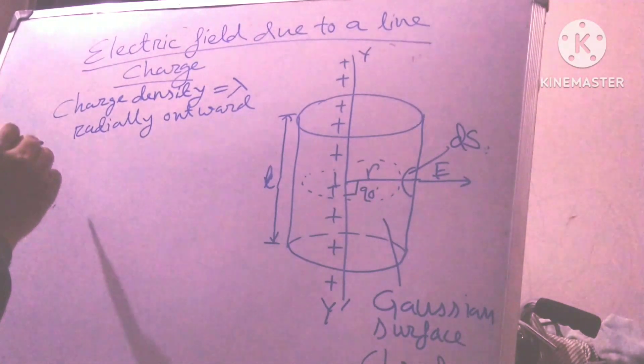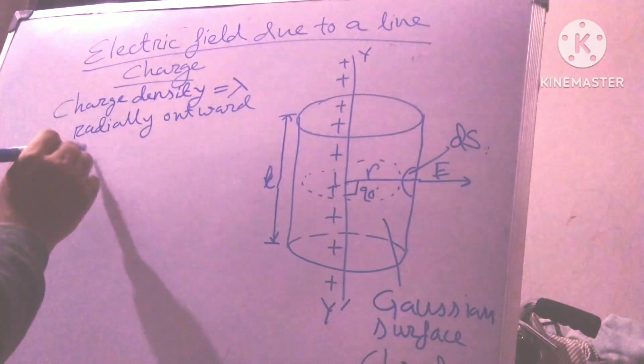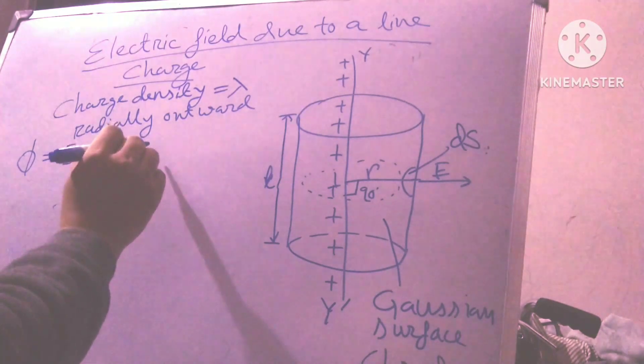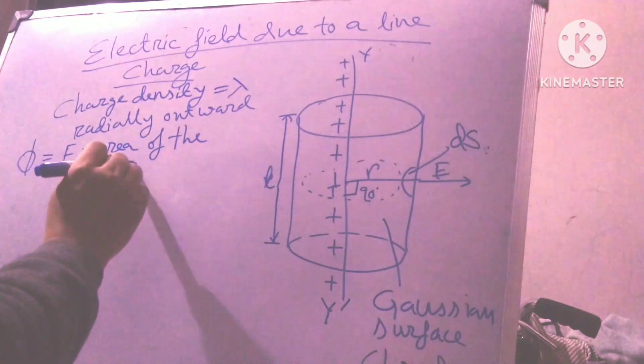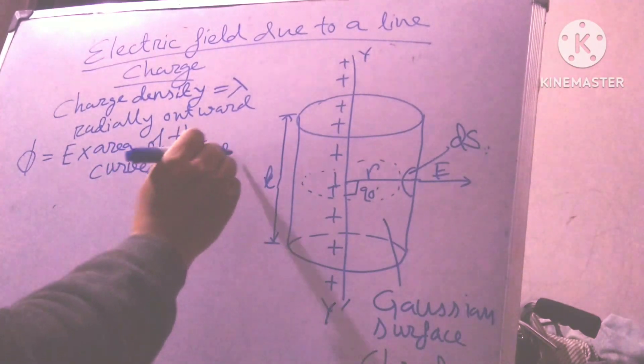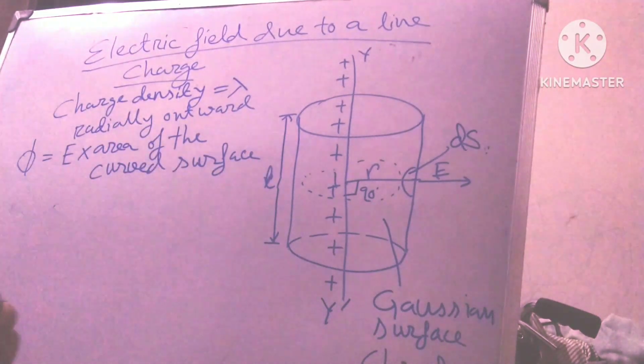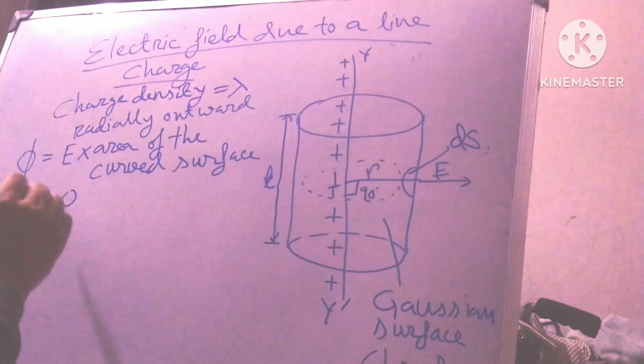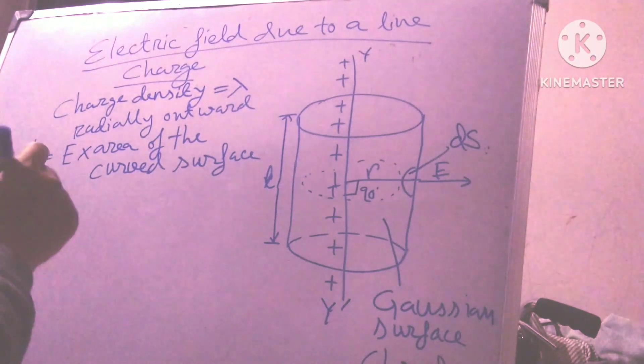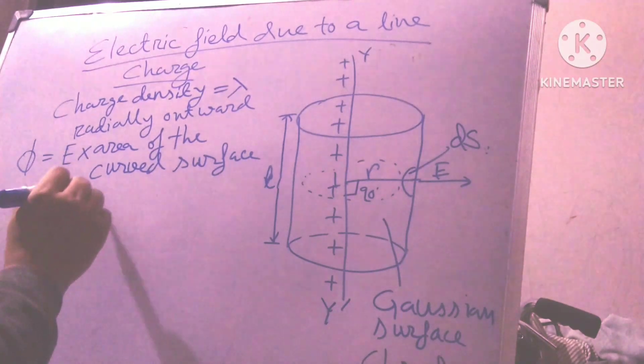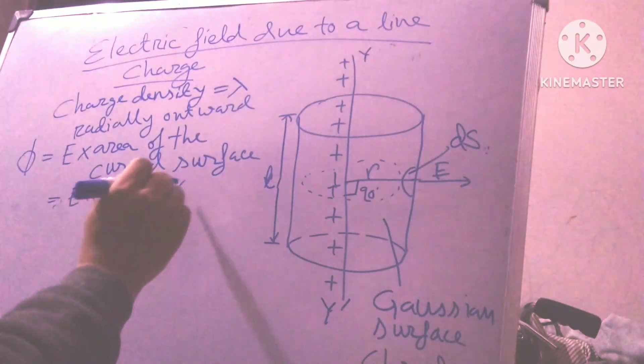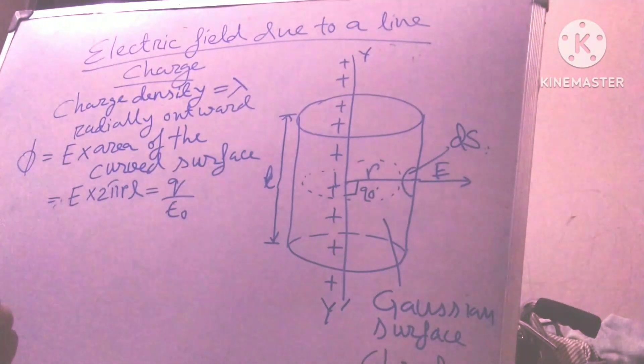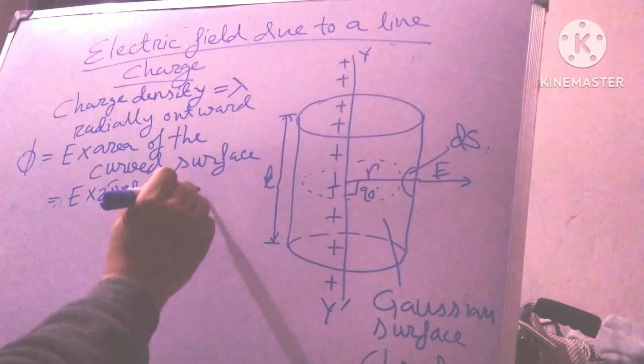So friends, what is the formula? Phi equals to E cross area of the curved surface. Area of the curved surface of a cylinder length l. So it can be written as E cross 2 pi r l. And phi equals to, by the Gauss's law, q divided by epsilon 0. And you must remember that q is equal to lambda l.